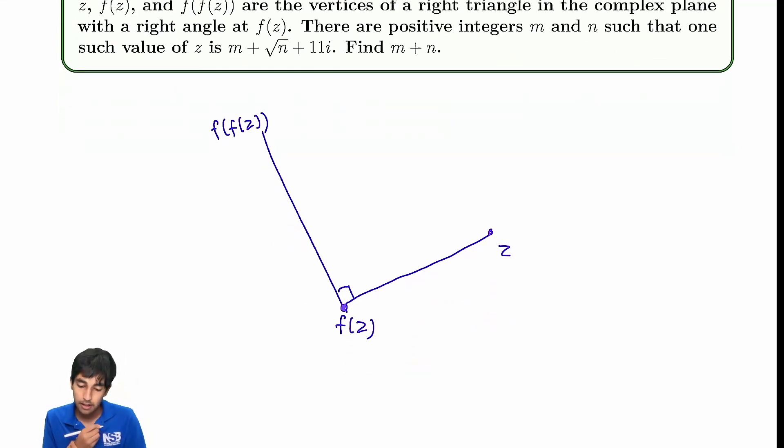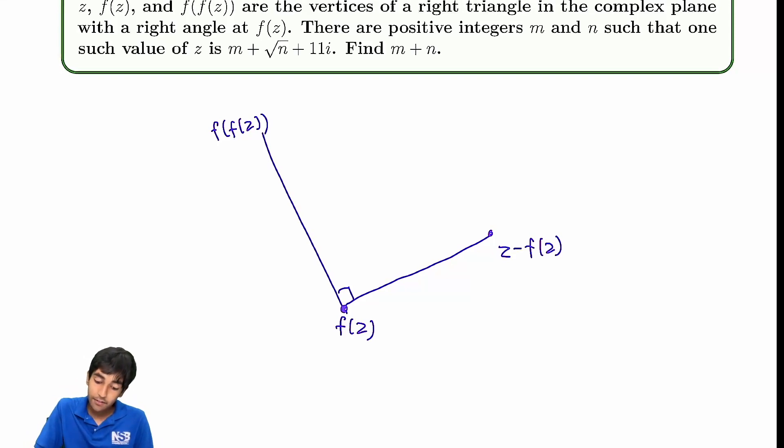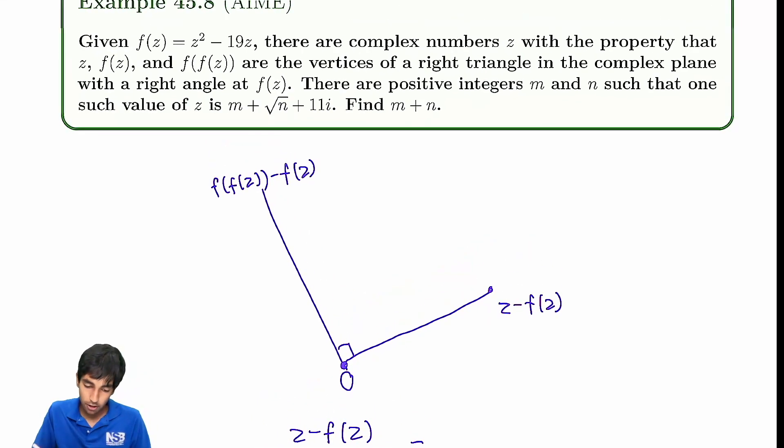The key strategy here is it's easy to deal with rotations about the origin. We multiply by cis of the angle. But about f(z)? It's harder to deal with that. So what we're going to do is scale this whole figure by f(z). We're going to subtract f(z) from all the coordinates. This way, now we have the origin, and rotations about the origin are very easy.